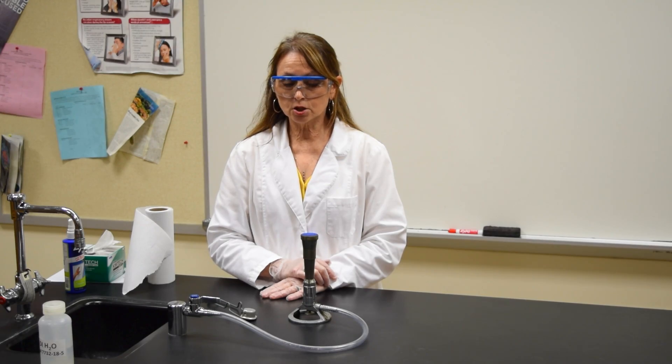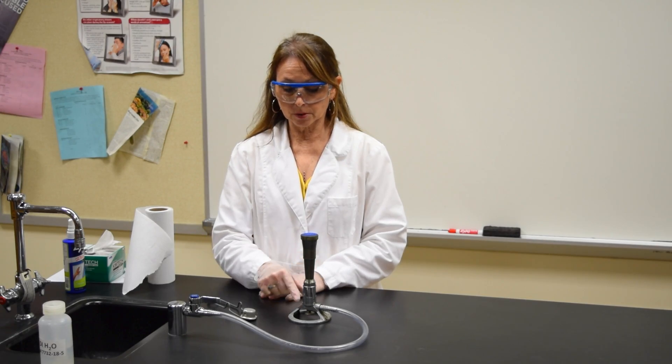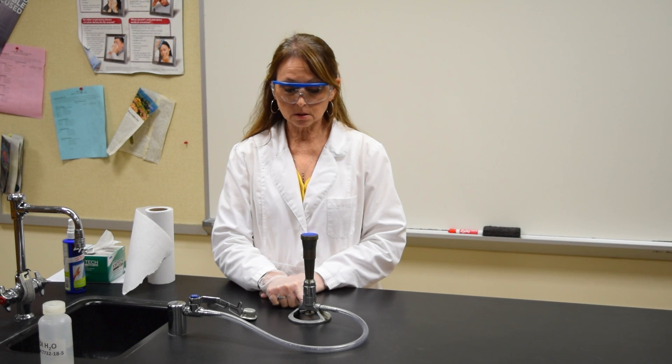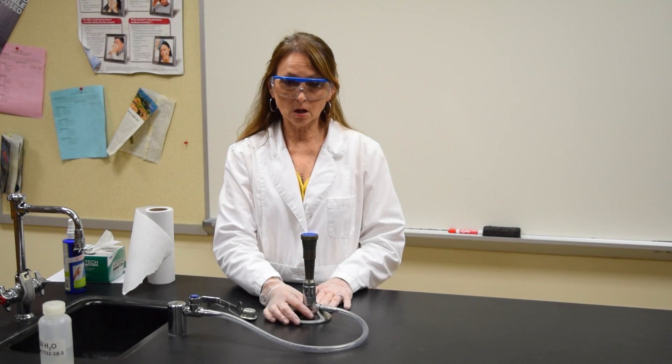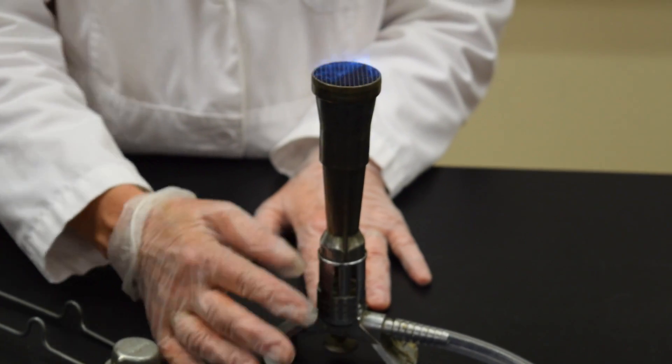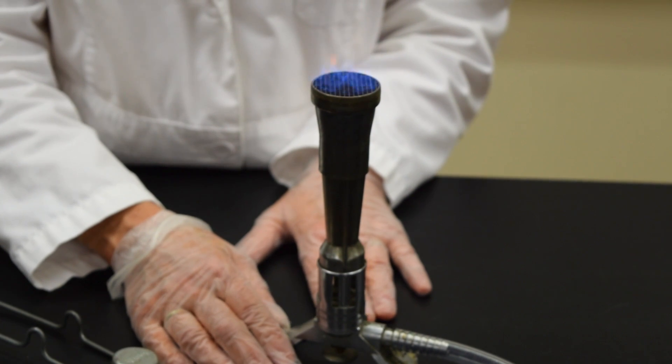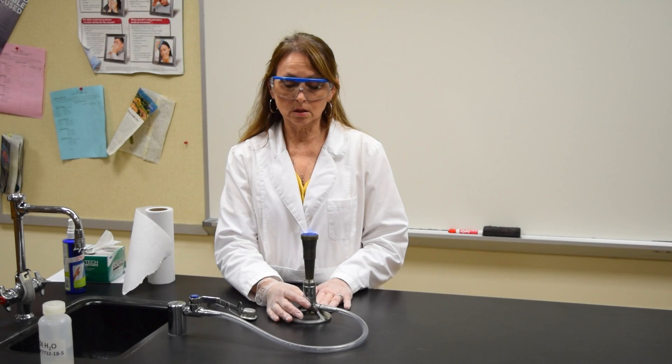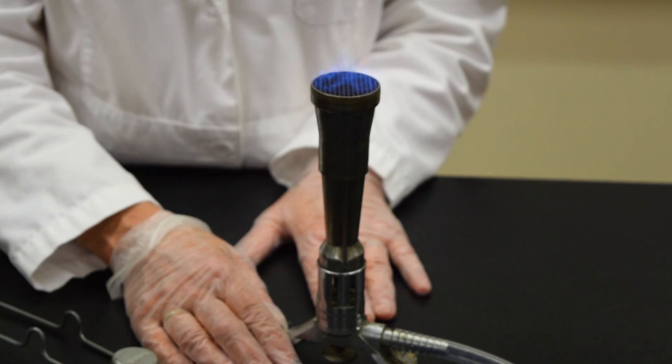To adjust the oxygen going through the flame of the Bunsen burner, there is a wheel at the base. If you turn the wheel clockwise, the oxygen going through the Bunsen burner is increased. The flame gets much higher. There's hissing.